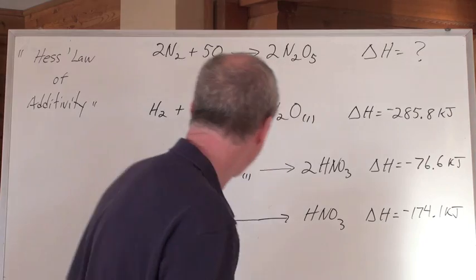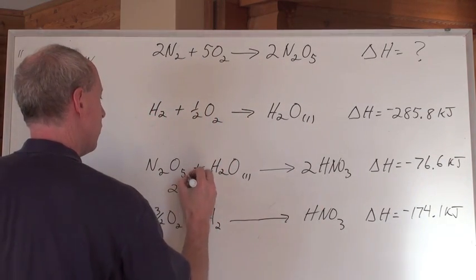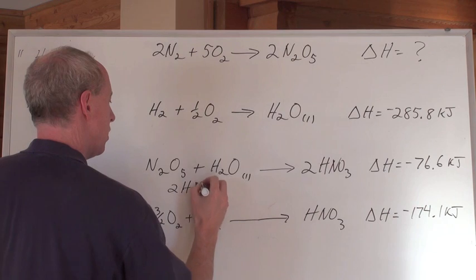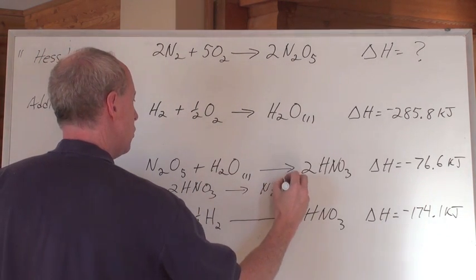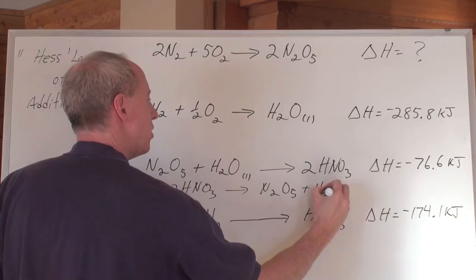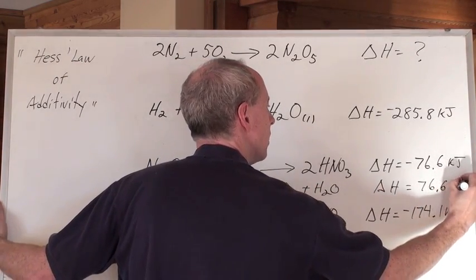So that means I'm going to take this equation right here and I'm going to write it out again in reverse. So it's going to be HNO3 makes the N2O5 plus the H2O, delta H equals 76.6 kilojoules.